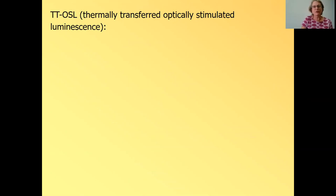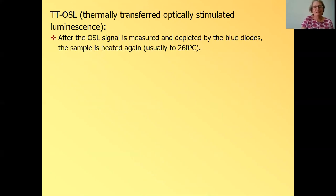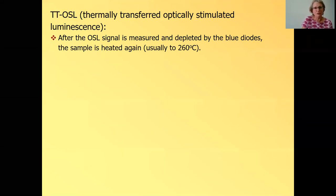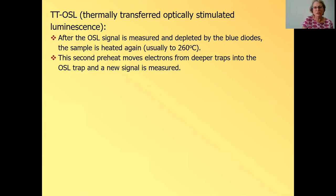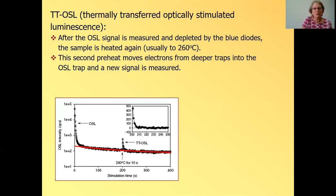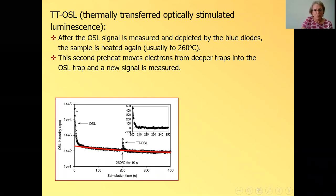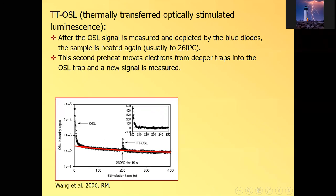I will not talk about other extended range methods like quartz super grains, single grain TTOSL, and violet stimulated luminescence. There's just no time for all of that. So let's start with the TTOSL, the thermally transferred optically stimulated luminescence. I will not repeat this whole acronym. We'll just say TTOSL. And it's measured like that. After we measured the OSL signal for a long time and depleted completely by the blue diodes, the sample is heated again. And this second heating moves charge, electrons from deeper traps into the OSL trap. And here is the experiment. Here is the original OSL signal. And note that this is a log scale. And so we measure the OSL signal for 200 seconds, and then we preheat it at 260 for 10 seconds. And suddenly we have a new signal.